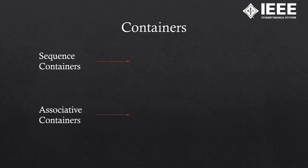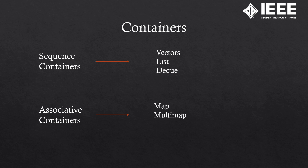Let's look at what types of containers STL offers. The first type is sequence containers, which store data in a sequential format — vectors, list, and deque fall under this category. Associative containers store data in a key-value format — map, multi-map, set, and multi-set fall under this category.